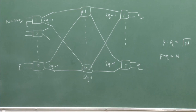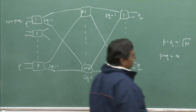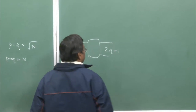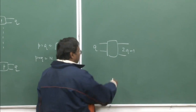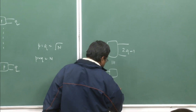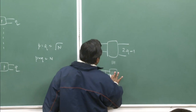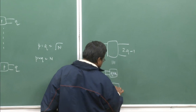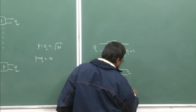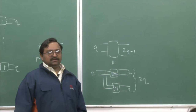We were trying to build up a recursive construction. The next step was: I took this switch having q inputs and 2q−1 outputs, and said it can be equivalently represented by two q×q switches. So the number of outputs will now be q + q = 2q. Not 2q−1, but 2q.